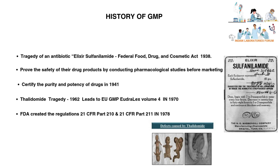In the 1940s, the Food and Drug Administration implemented requirements we use today in good manufacturing practices regulation. Pharmaceutical companies were required to test and certify the purity and potency of drugs in 1941, and requirements were implemented to test their safety and effectiveness in 1945.